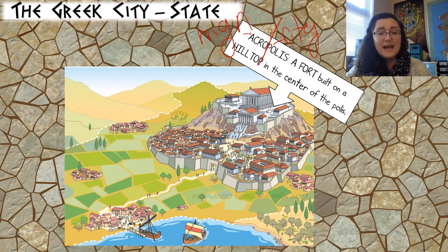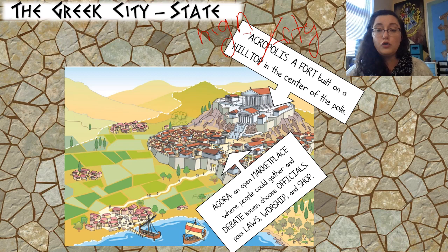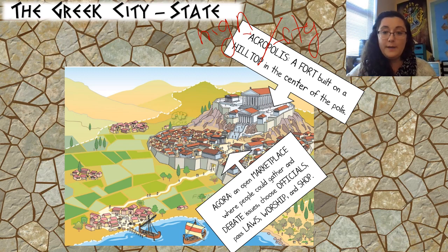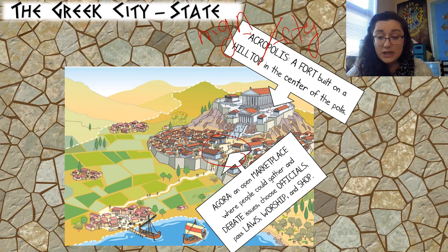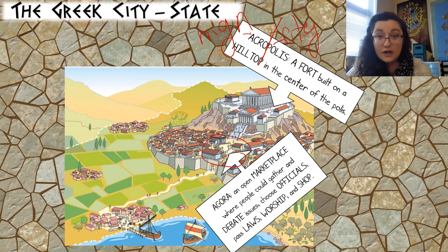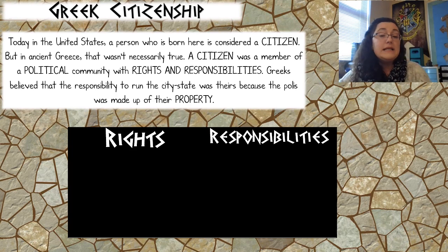The polis also had a place called the agora — an open marketplace where people could gather and debate issues, choose officials, pass laws, worship, and shop. It's down on the flatland so you don't have to climb stairs to get to it. It's a common gathering place — the difference between a town square and the fortress. It's similar to downtown St. Augustine, where we have the fort but also St. George Street and the surrounding areas.